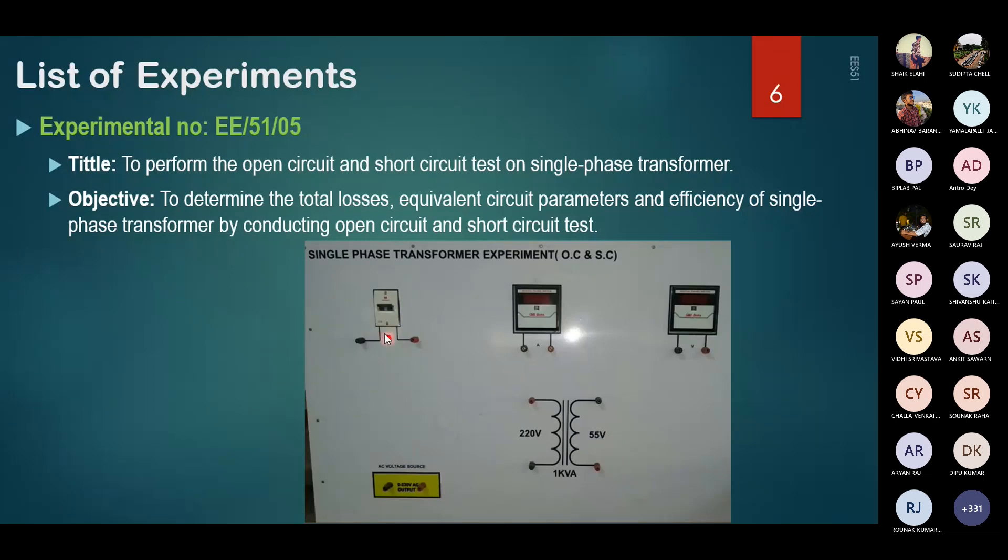So there is a supply and these two are the meters. Here the AC voltage source will be connected. This will be the AC voltage source given over here. This is 220 volt required for this and this is one kVA transformer.